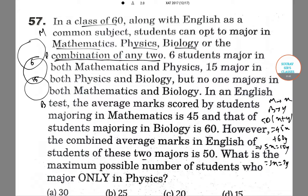We have the equation 50 into (X plus Y) is equal to 45X plus 60Y, because the combined average marks in English of students of these two majors is 50.